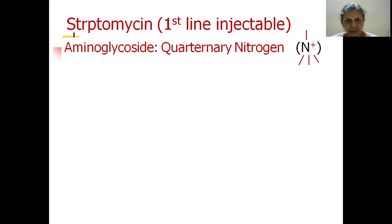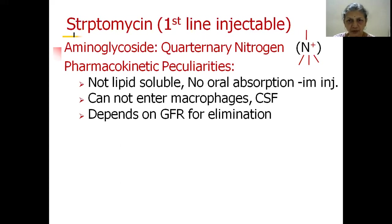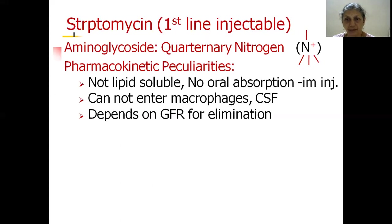Streptomycin is an injectable drug because it is an aminoglycoside — a quaternary nitrogen compound with a positively charged nitrogen. Because of this, it is not lipid-soluble, cannot be given orally, and must be injected intramuscularly. It cannot enter macrophages, which is why it had to be given for 24 months — only when bacilli emerged from macrophages could streptomycin exert its effect. It doesn't cross the blood-brain barrier or enter the CSF, so it's not useful for TB meningitis. Being lipid-insoluble, it depends entirely on glomerular filtration rate for elimination, limiting its dose in patients with reduced GFR.